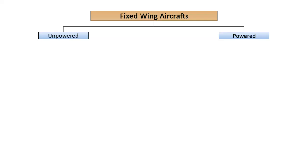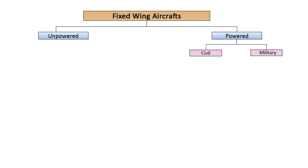Fixed-wing aircraft are classified as either powered or unpowered vehicles. As outlined in the figure, fixed-wing aircraft may be classified as civil or military types. In this video, civil aircraft will be further discussed.